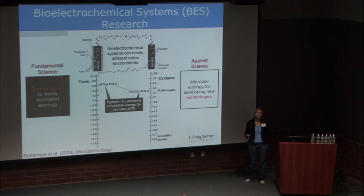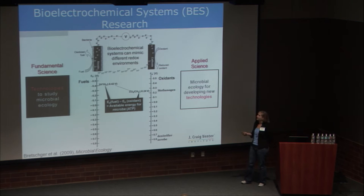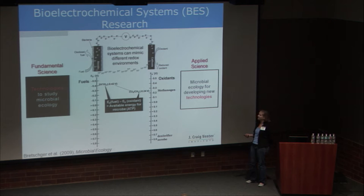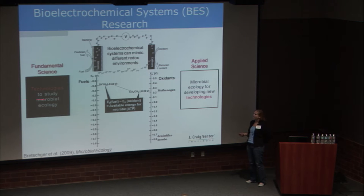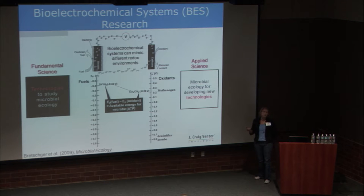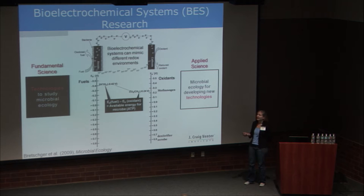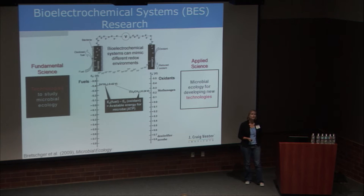Studying organisms in bioelectrochemical systems allows us to define biofilms at a specific redox potential and study how they're moving electrons in and out of the cell, and ultimately perhaps between different community members existing at that redox potential. We can change those redox potentials and see how organisms respond — utilizing bioelectrochemical systems to study microbial ecology, and then ultimately using microbial ecology specifically for developing technologies.